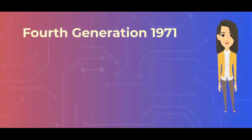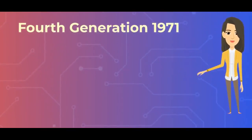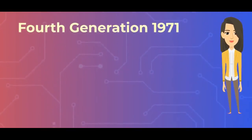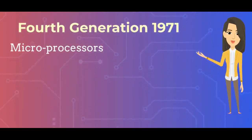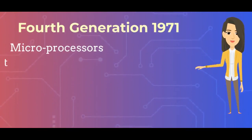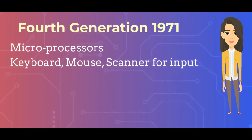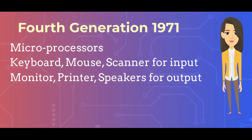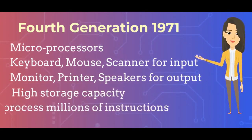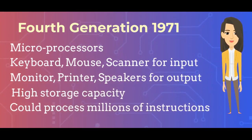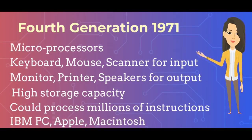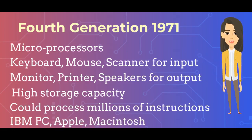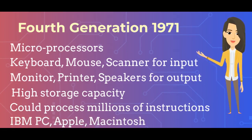Fourth Generation Computers, 1971: They used microprocessors. Keyboard, mouse, scanner and so on were used for input; monitor, printer, speakers and so on for output. They had high storage capacity and could process millions of instructions per second. IBM PC and Apple Macintosh are examples.